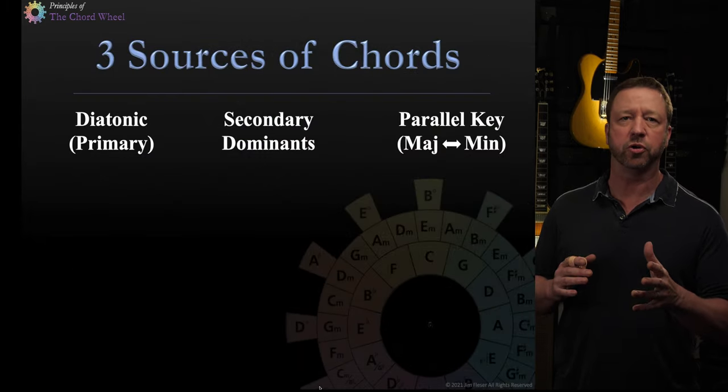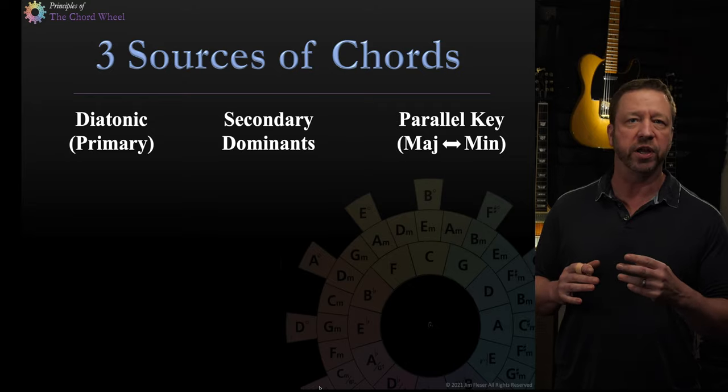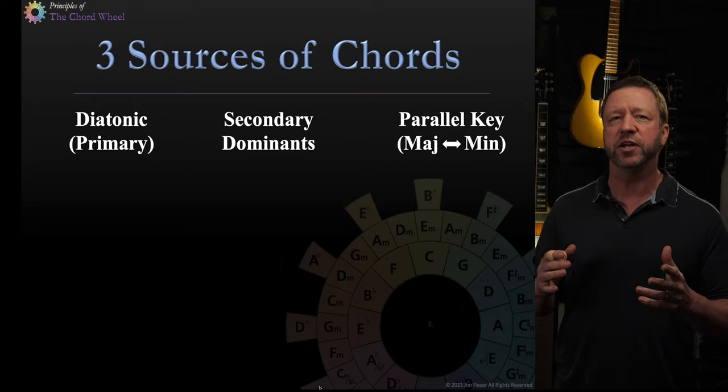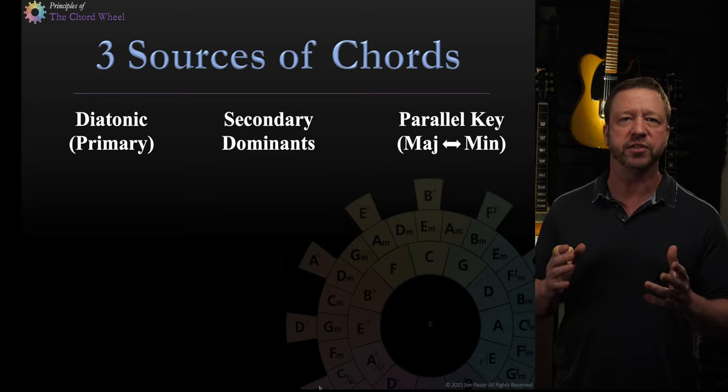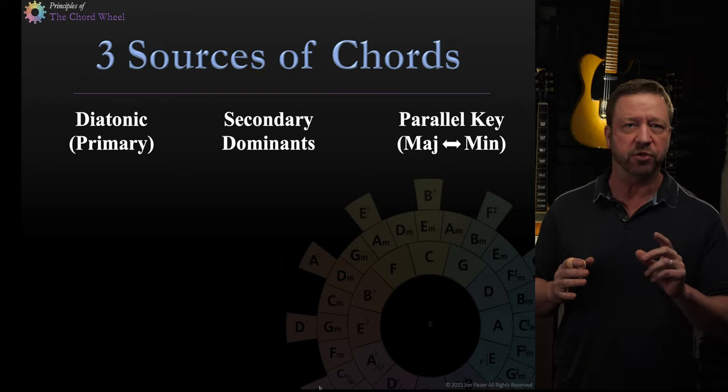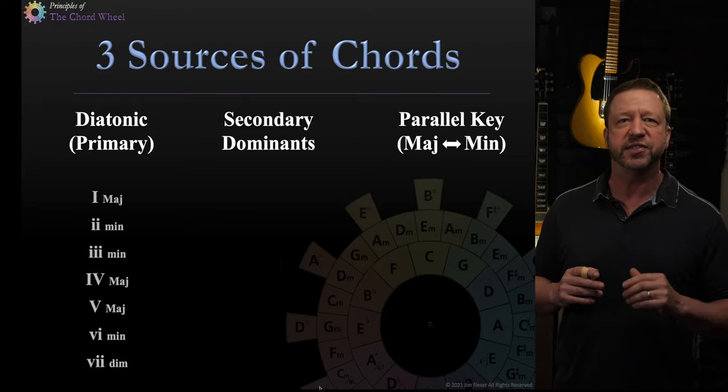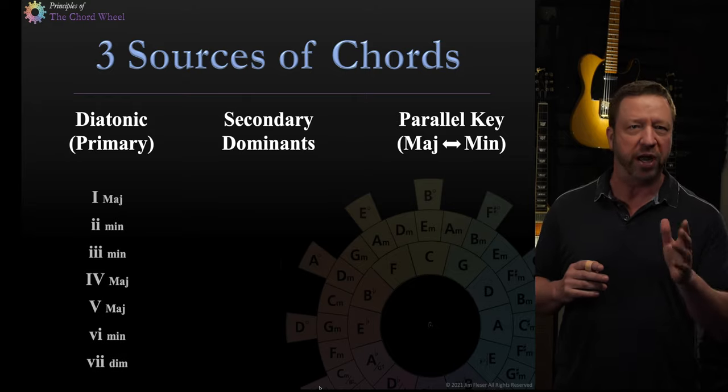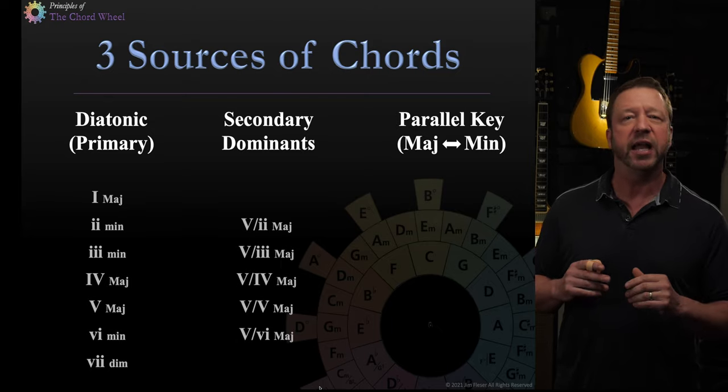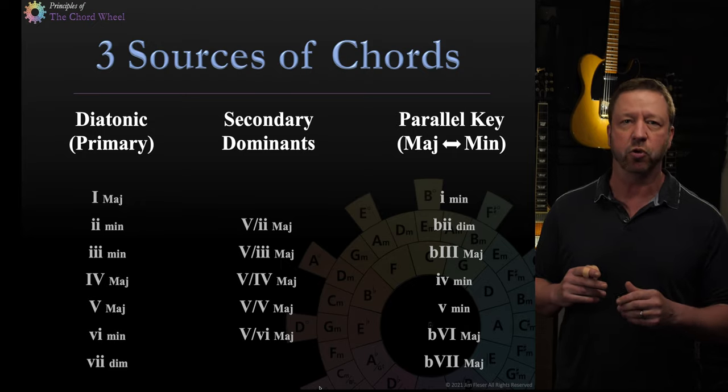Rick also uses the term primary. Now in traditional music theory, primary would imply the one, the four, and the five chord, whether in major or minor. Rick is using it here in a more broad sense, and that is any chord that belongs to the key, which I think is a fine use. But keep an eye on that primary might be used a little differently if you look at the traditional music theory texts. Rick outlines the seven chords that belong to the primary key, the diatonic. He also outlines the five secondary dominants, and last but not least, the parallel key. In this case, the parallel minor, and its seven chords.